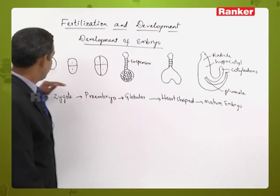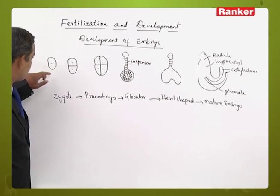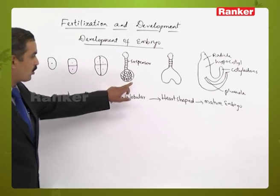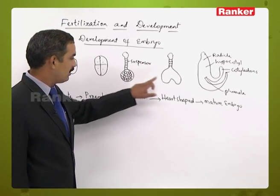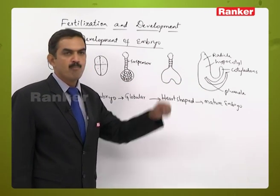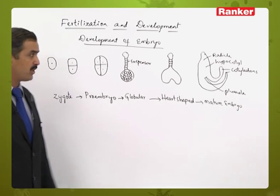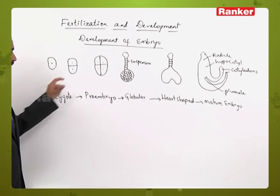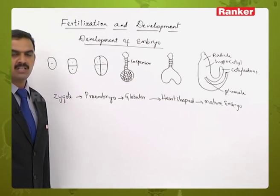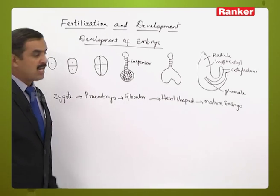So here are the changes from zygote to the pro embryo, to globular embryo, to the heart-shaped embryo, and the matured embryo. These are the changes which take place during the development of the embryo.